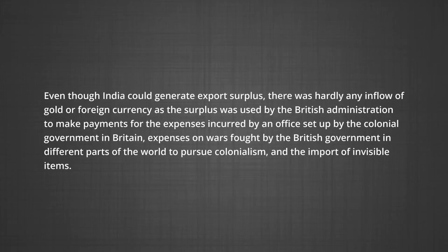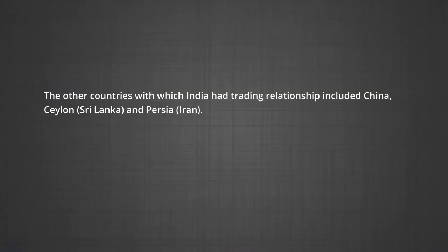Even though India could generate export surplus, there was hardly any inflow of gold or foreign currency, as the surplus was used by the British administration to make payments for the expenses incurred by an office set up by the colonial government in Britain, expenses of wars fought by the British government in different parts of the world to pursue colonialism, and the import of invisible items. This way, the British used foreign trade to drain out the wealth of India. The other countries with which India had trading relationships included China, Ceylon (now Sri Lanka), and Persia (now Iran).